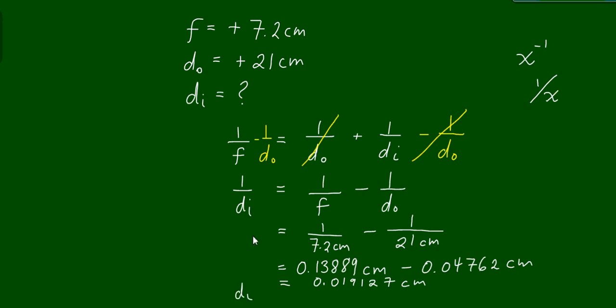I need to take the reciprocal of both sides. I flip 1 over d_i so it becomes d_i over 1. If I do that to this side, I must do it to the other side. When I flip 0.019127 centimeters, I end up with 10.96 centimeters. That would be the distance to the image.